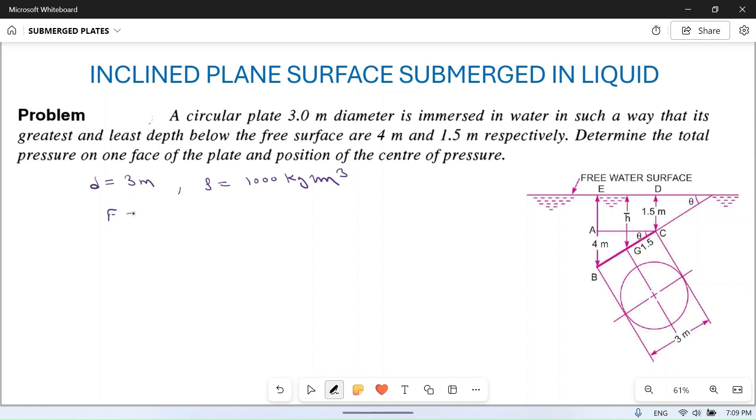Let's see the diagram. This is 4 meters, this is 1.5 meters. What is the value of AB? AB is 4 minus 1.5, which is equal to 2.5 meters.